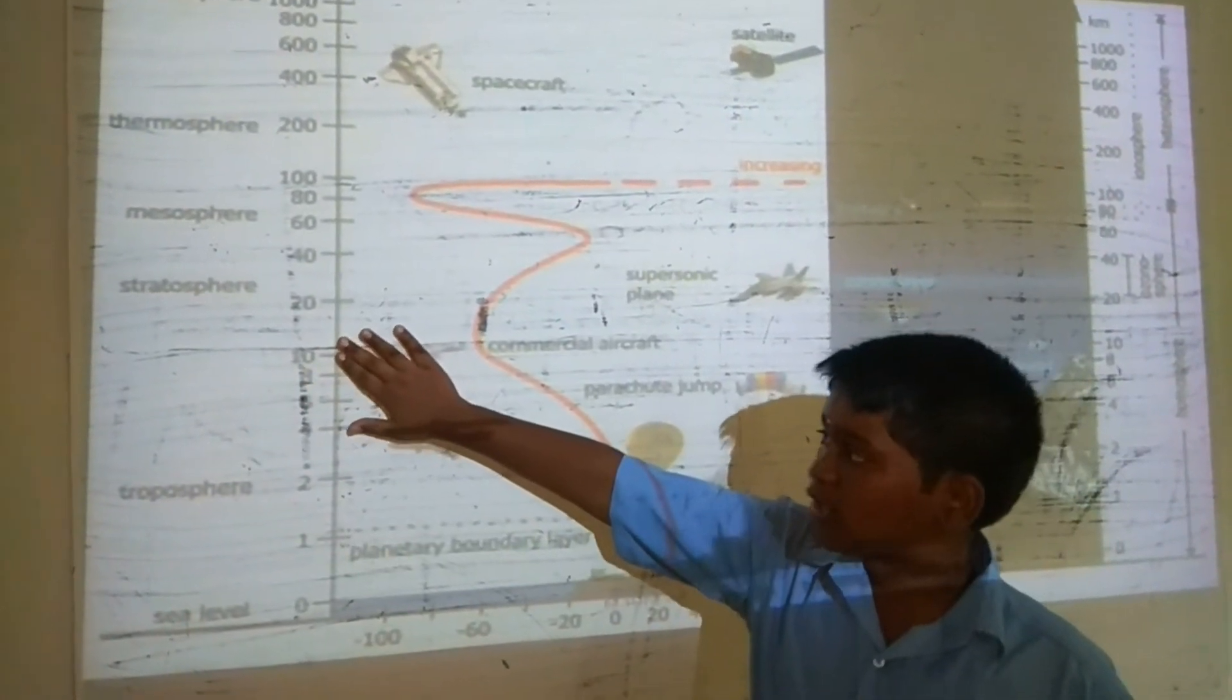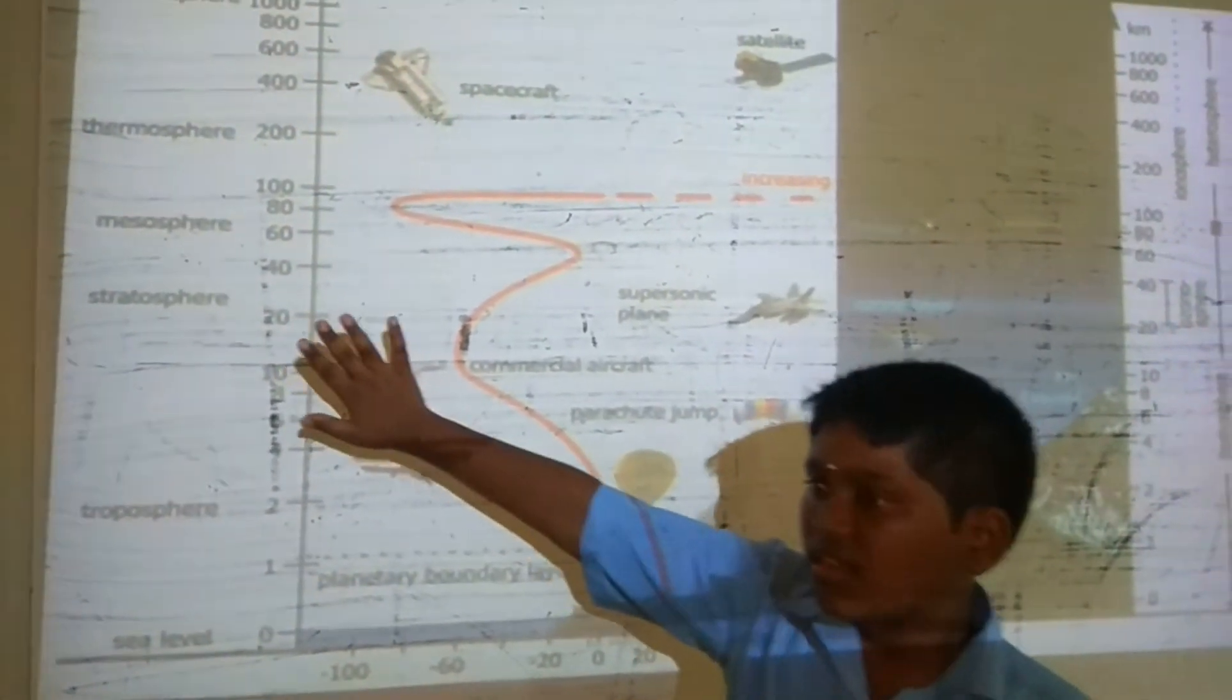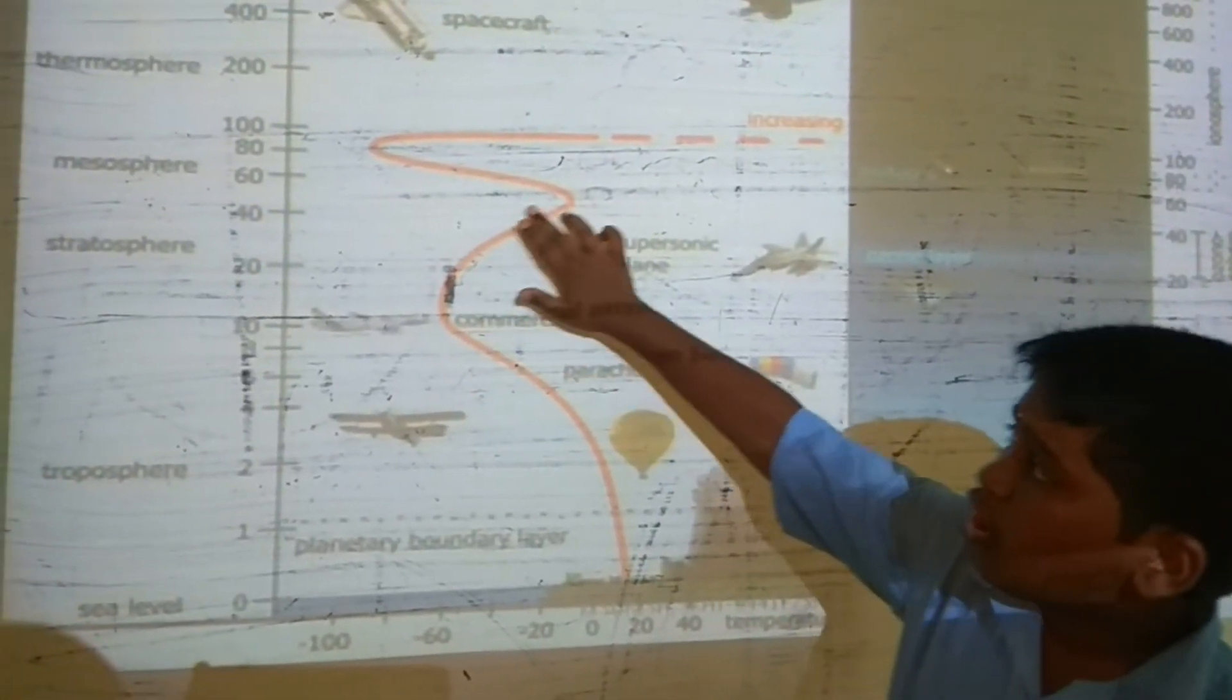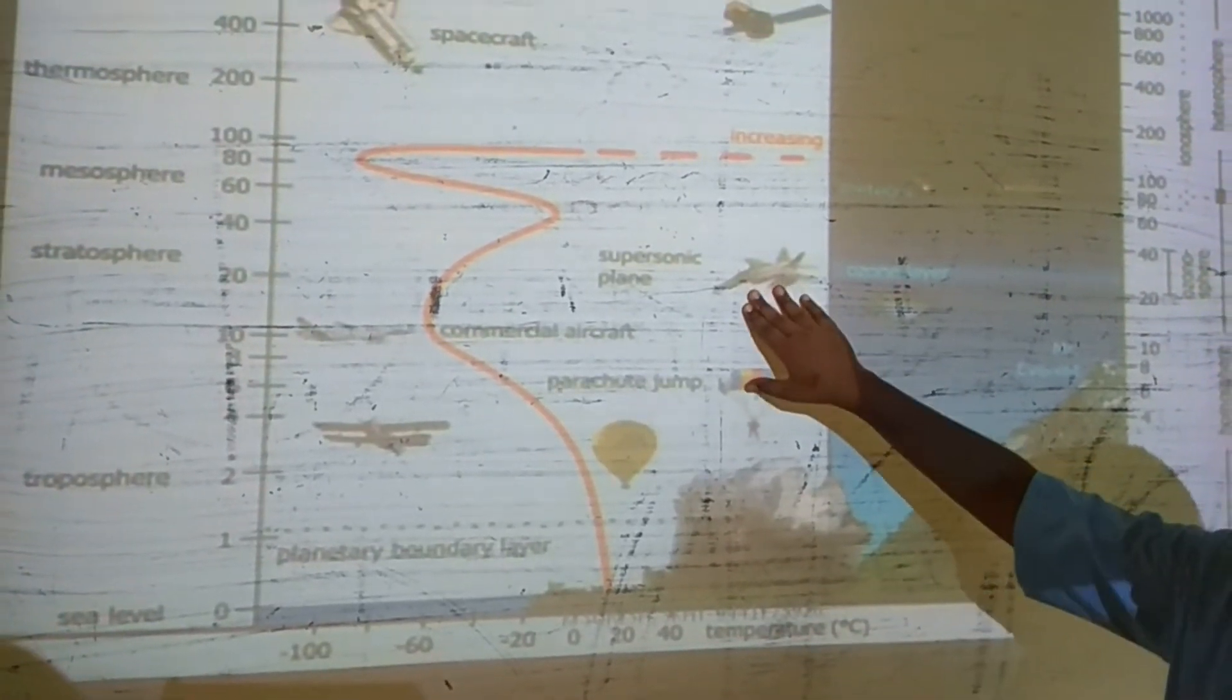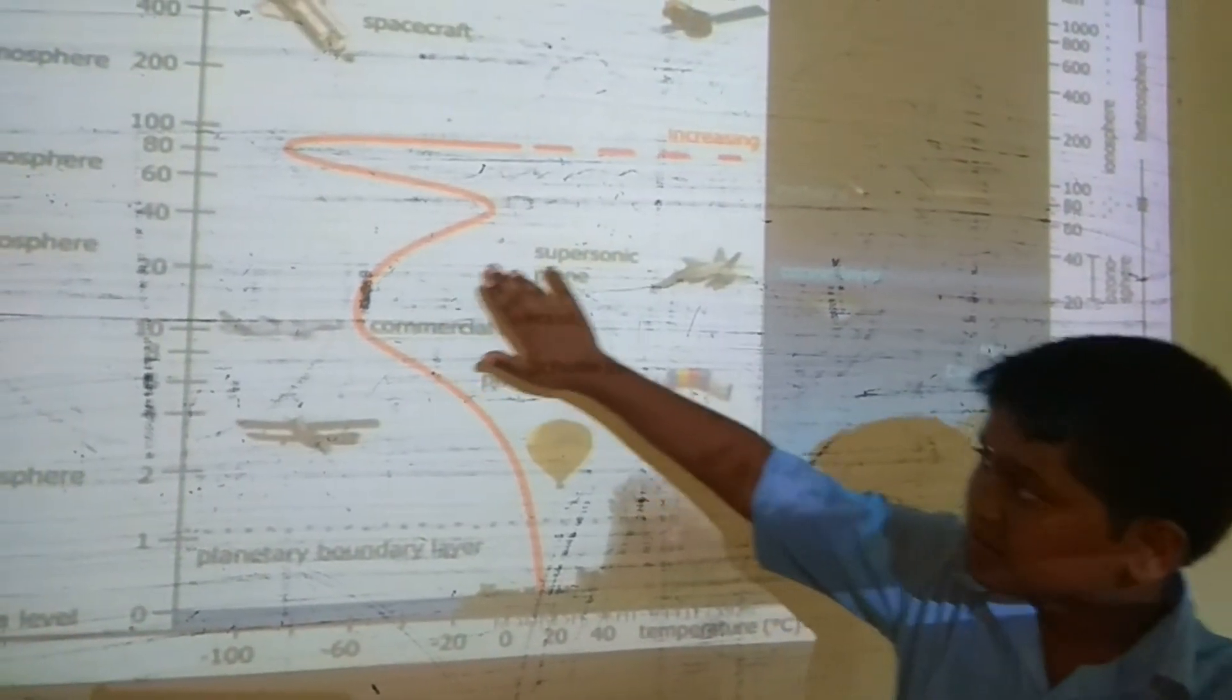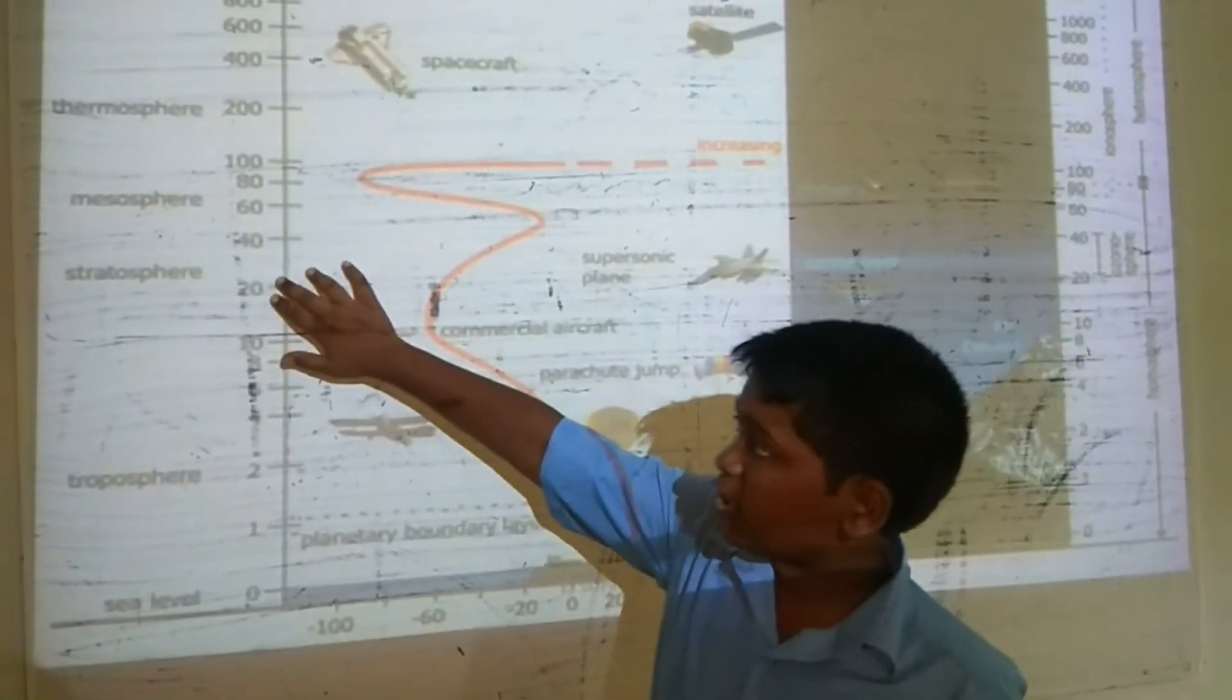The second sphere in the atmosphere is the Stratosphere, from 18 to 50 kilometers. If we go upward in the Stratosphere, the temperature decreases and supersonic planes travel in this sphere. The ozone layer is also present in this layer.